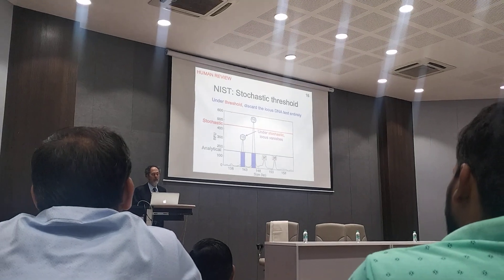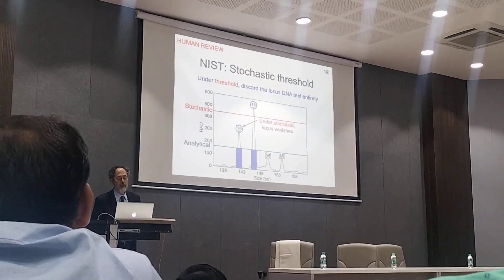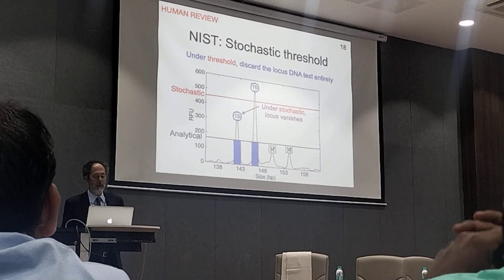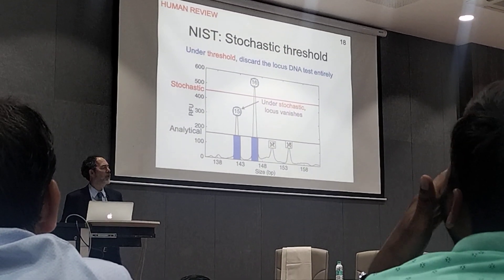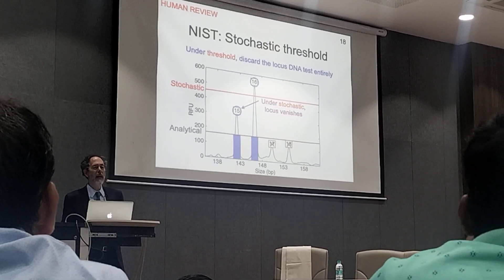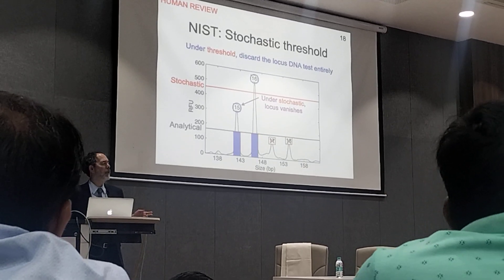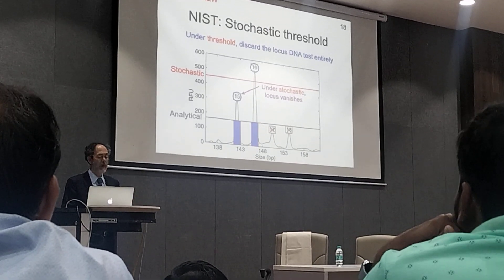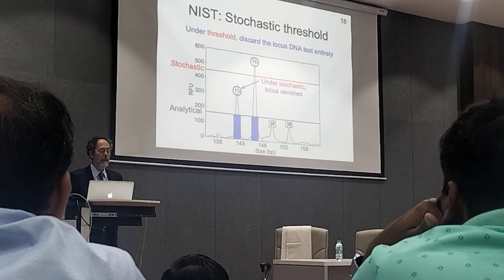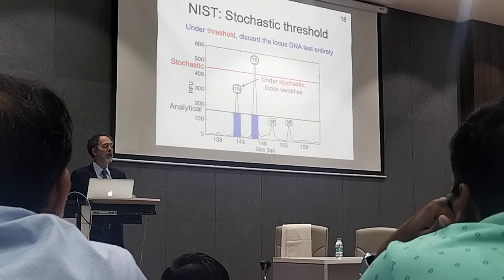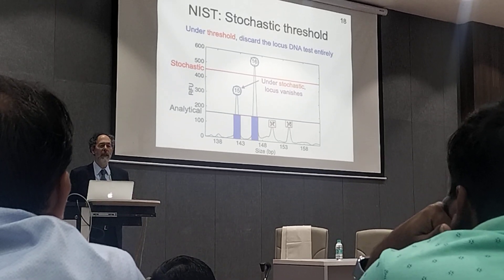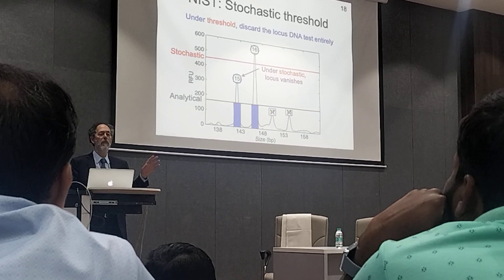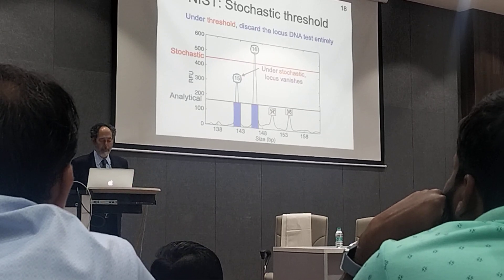NIST and the FBI introduced something called stochastic thresholds in a paper in 2009, adopted by SWGDAM in 2010 for human review. The paper they published had no data in it — there was no validation. It was just cartoons of what a protocol would be.